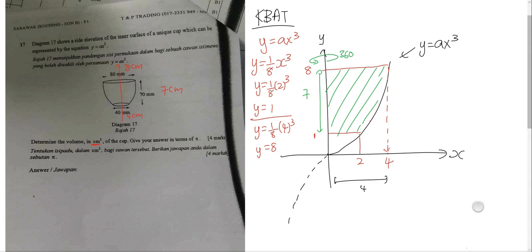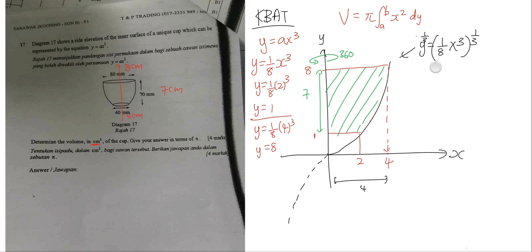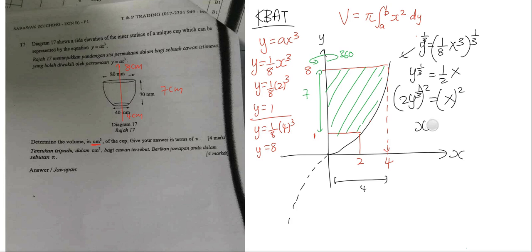The next step is to make x the subject, because if I want to rotate around the y-axis, the volume formula equals π times the integral from a to b of x squared dy. But the problem is we don't have x squared yet. So I cube root both sides — multiplying by power 1/3. This gives y^(1/3) = (1/2)x, so x = 2y^(1/3). Then I square both sides, so x squared equals 4y^(2/3).